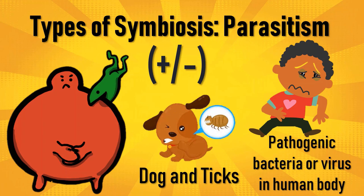Parasitism is different from predation because parasites do not really kill their host — they just take benefit from their host.